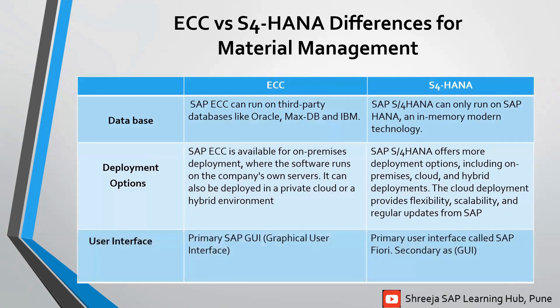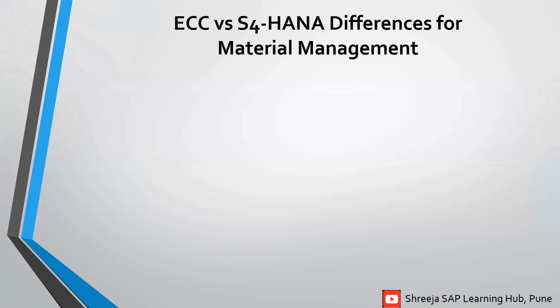Third one: user interface. In ECC, the primary interface is SAP GUI — Graphical User Interface. Whereas in S4HANA, the primary user interface is called SAP Fiori, with SAP GUI as the secondary interface.